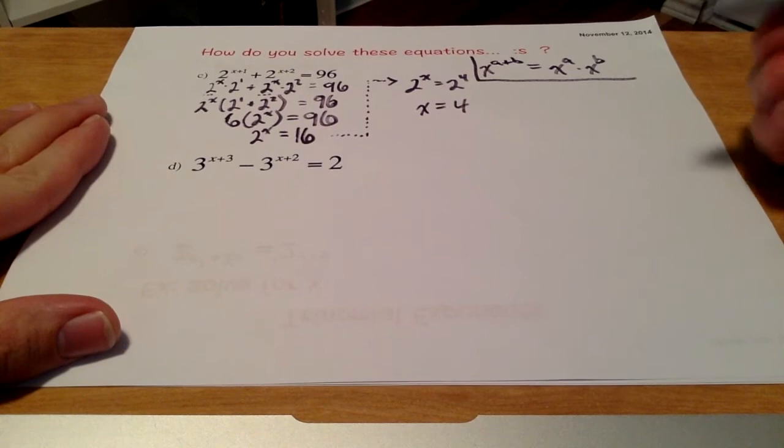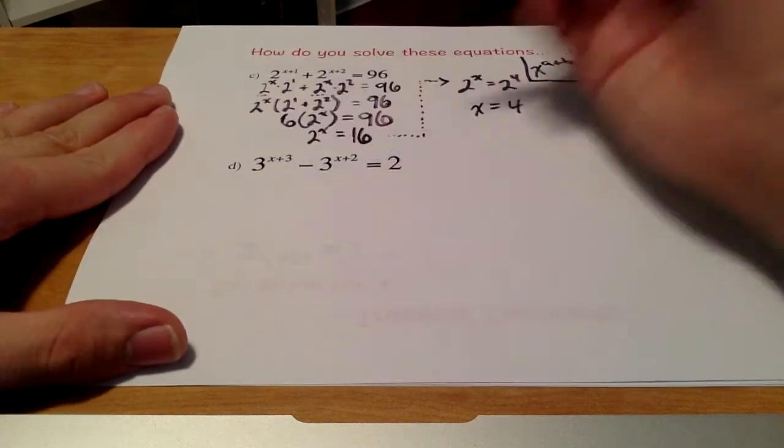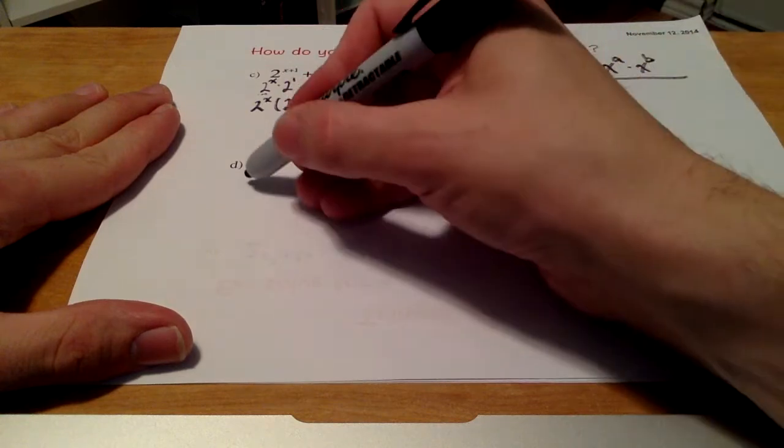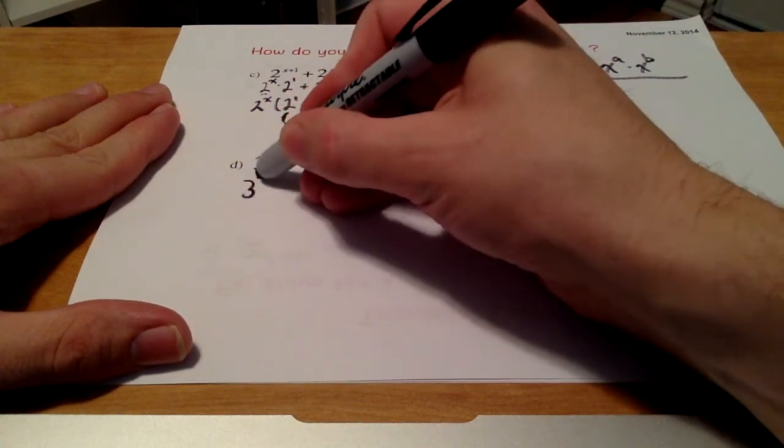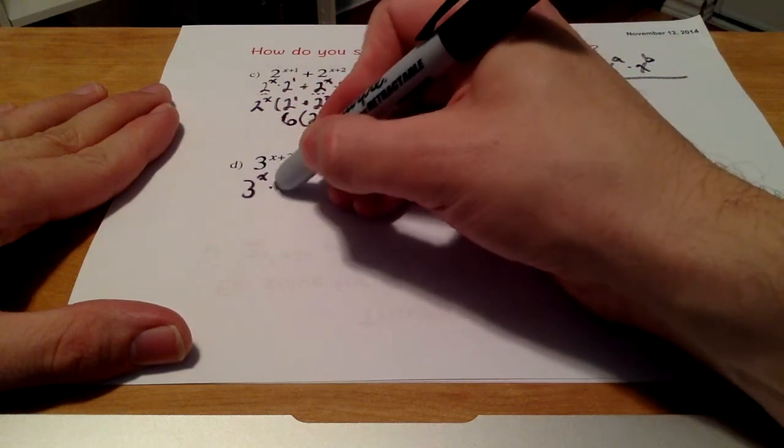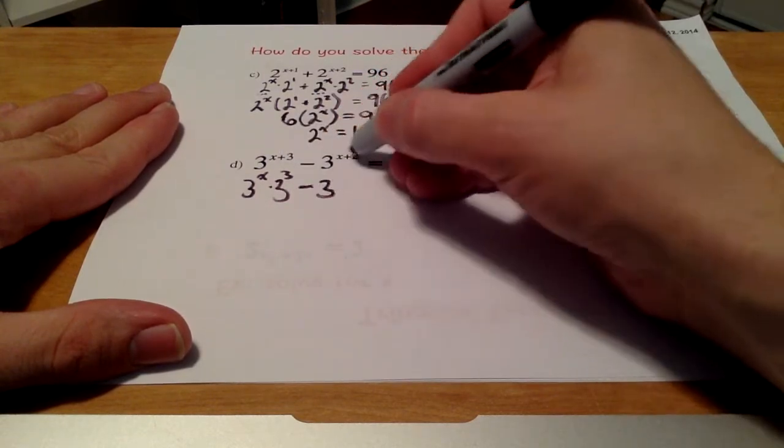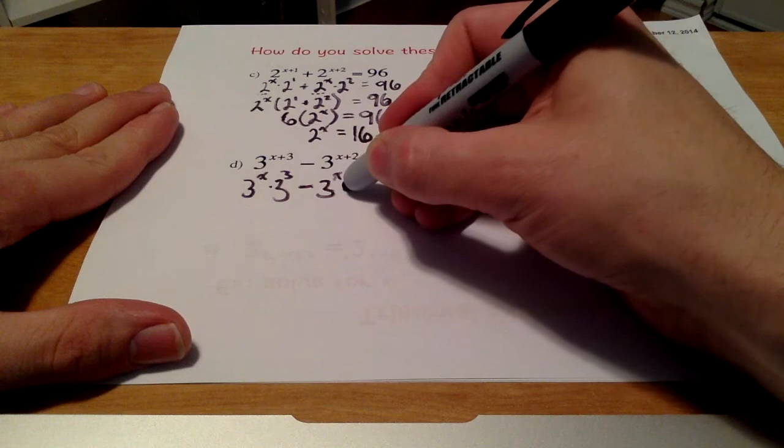So let's look at this one. Very, very similar problem. Two bases, but we're subtracting this time. I'm going to apply this exponent law again. I know that I can break this up into 3 to the power of x times 3 to the power of 3. And I can subtract, using the same law here, 3 to the power of x times 3 squared. And that's going to be equal to 2.